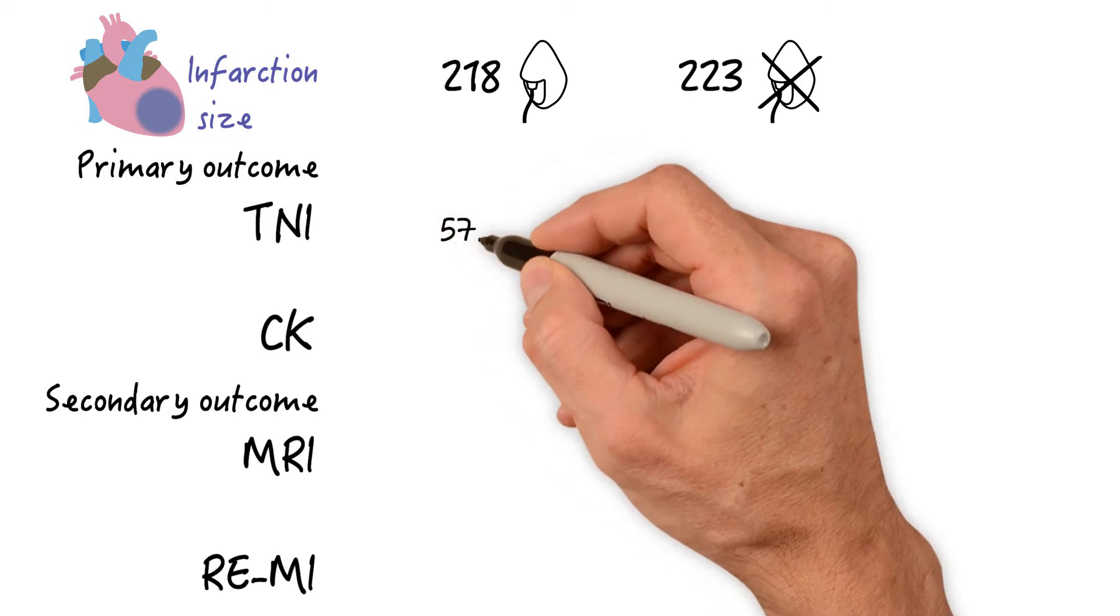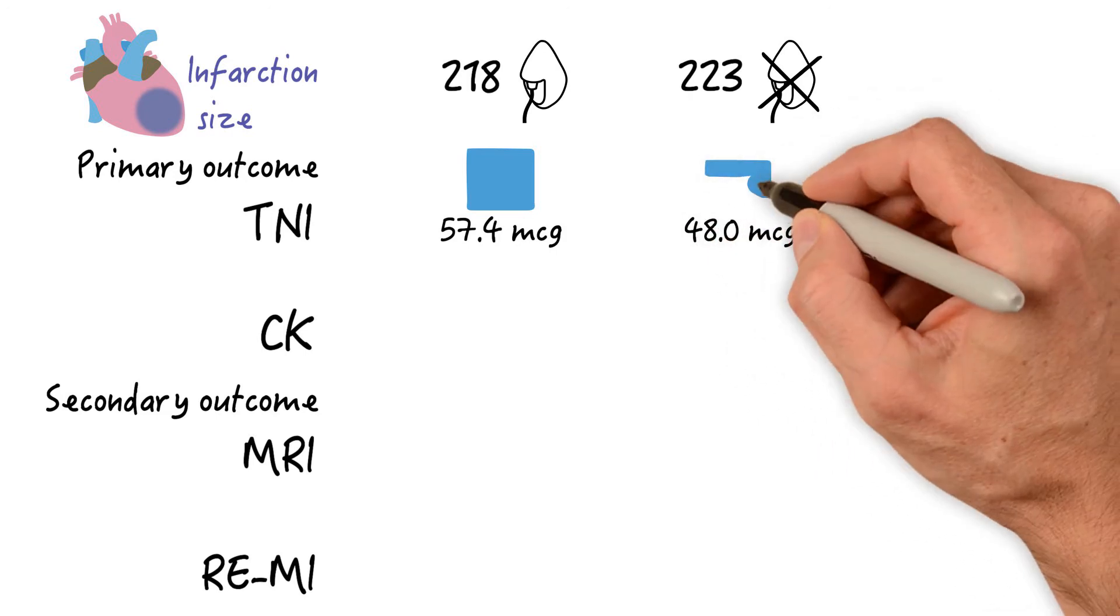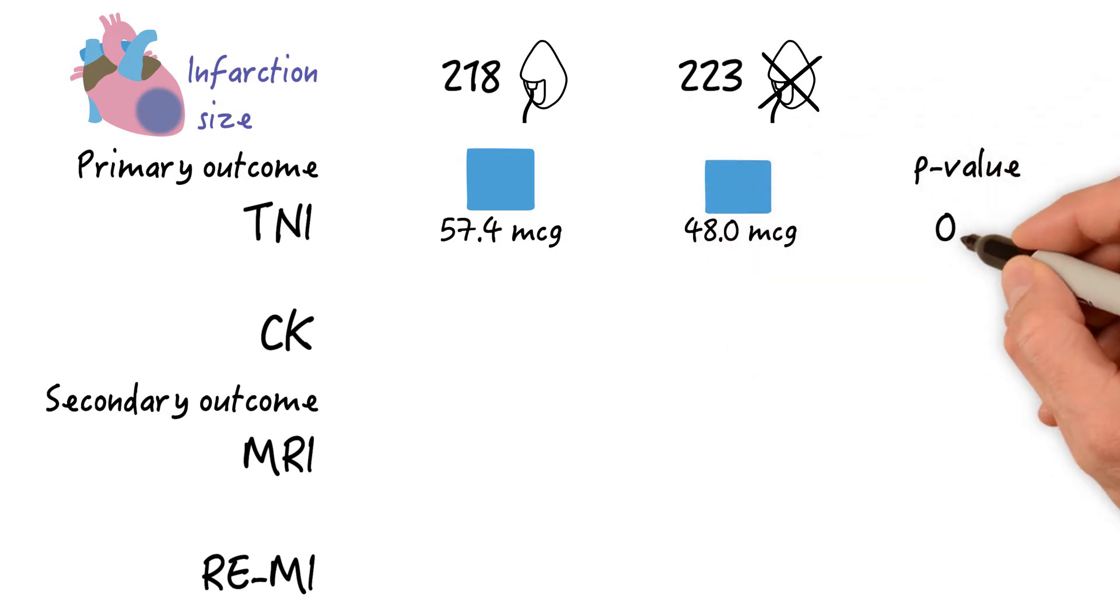Troponin was 57.4 micrograms per liter in the oxygen group versus 48 micrograms per liter in the room air group. So pretty similar.